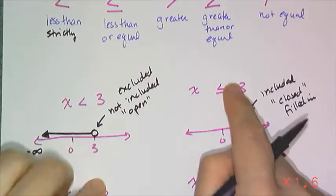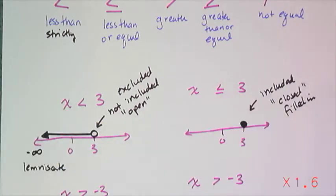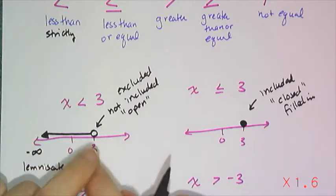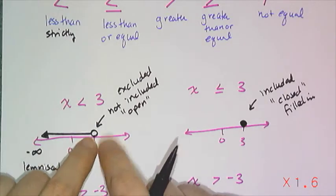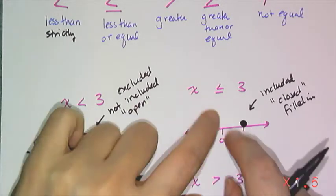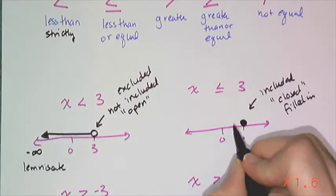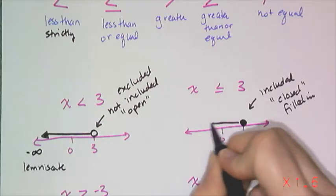It's a very subtle difference, but it makes a huge impact on mathematics. If I don't want the endpoint, there's no bar underneath the inequality symbol. If I want the endpoint, there's a bar underneath. And the arrow still goes the same direction — towards negative infinity.